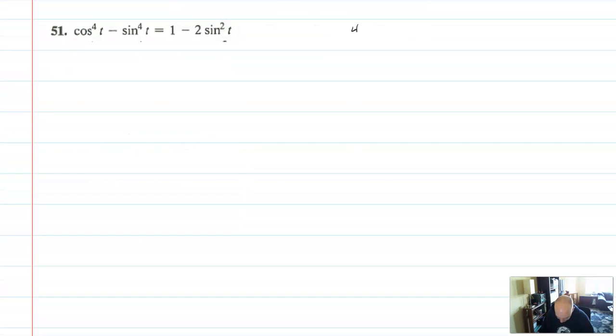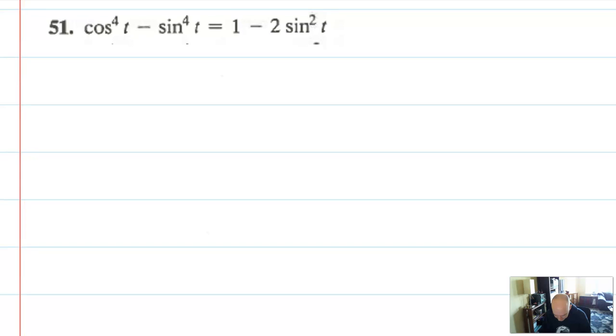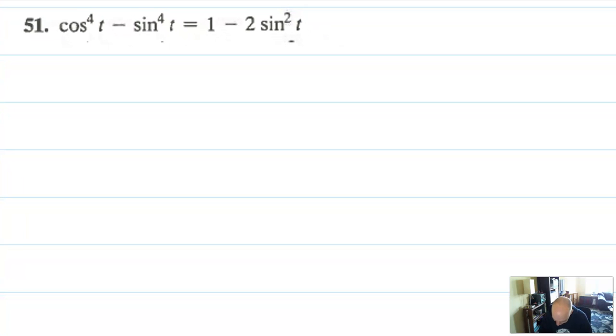Problem 51 is the last problem today. We did a problem a lot like this in the notes. What we want to recognize here is that the pattern x to the fourth minus y to the fourth is actually also a difference of squares pattern because this is x squared squared minus y squared squared. Here we have cosine to the fourth and sine to the fourth. So this is going to factor into cosine squared x minus sine squared x times cosine squared x plus sine squared x.